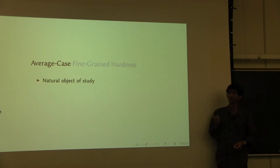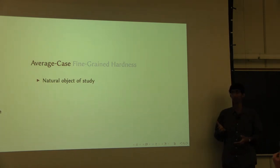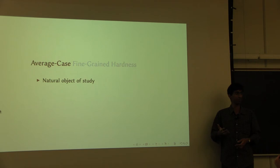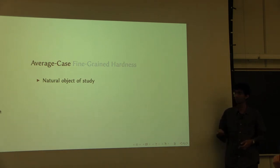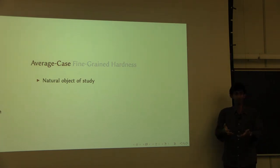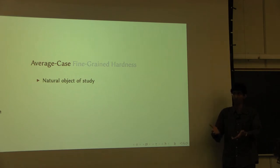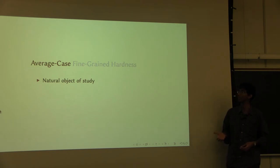One striking example is the case of satisfiability. SAT is supposed to be NP-hard, very difficult to solve. But in practice, people solve SAT instances all the time — there are SAT solvers that work over lots of different kinds of instances. It could very well be that problems that are hard to solve in the worst case are actually easy when encountered in the wild, because the instances that come up in applications are typically easy. So it really makes sense to study average-case complexity in that sense.